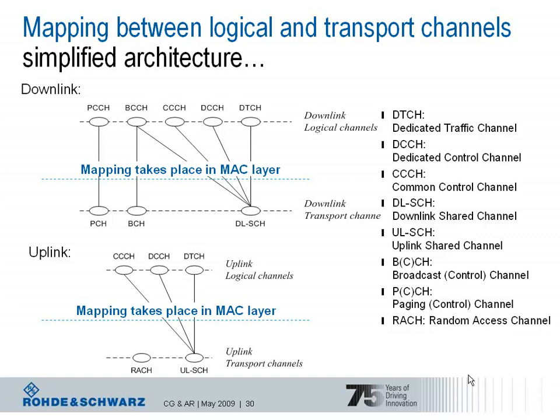We have a broadcast control channel that can be mapped onto the broadcast channel or the downlink shared channel. We also have a common control channel, dedicated control channel, and dedicated traffic channel as logical channels defined in the downlink, which are all mapped onto the downlink shared channel. So the downlink shared channel as a transport channel in LTE has a very important function.